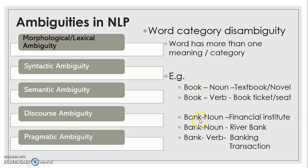Let us take another example. The word 'bank' can come in the category noun when used in the context of a financial institute. It can also be noun in the context of a riverbank. And the word 'bank' can come under the category verb when used in the context of a banking transaction. Understanding the category, finding the exact meaning, and resolving those is a lexical ambiguity.